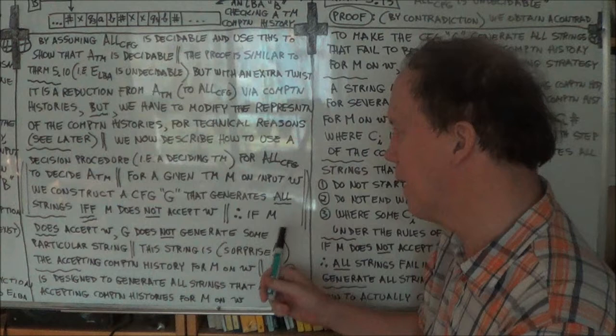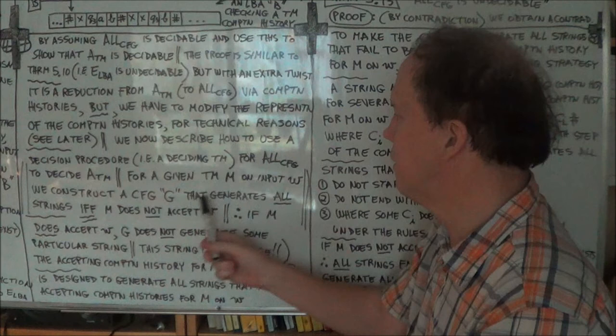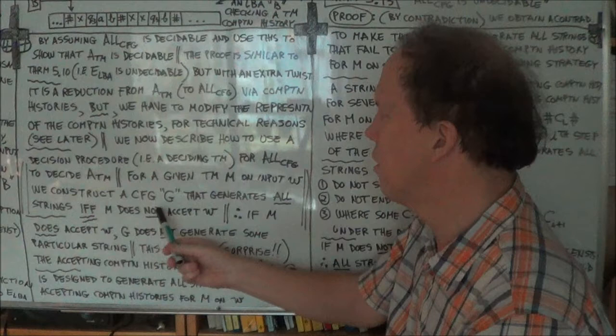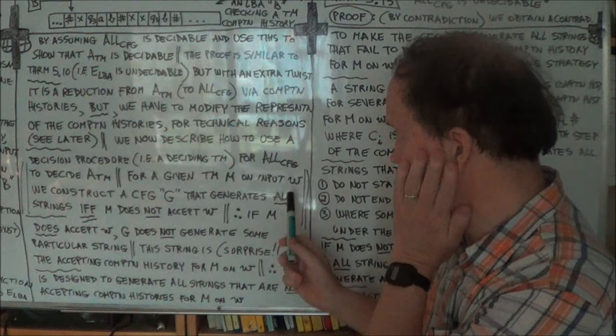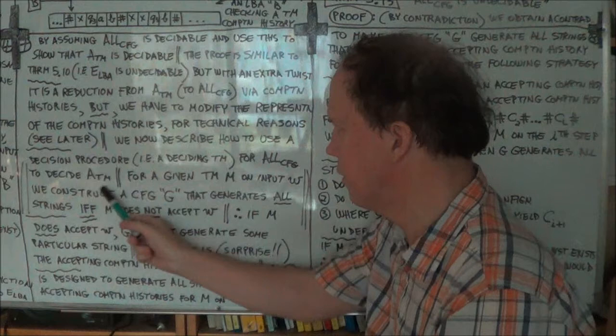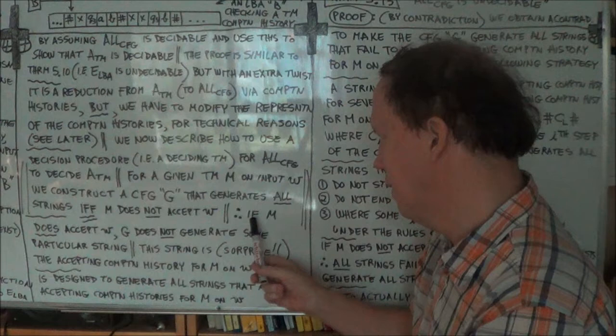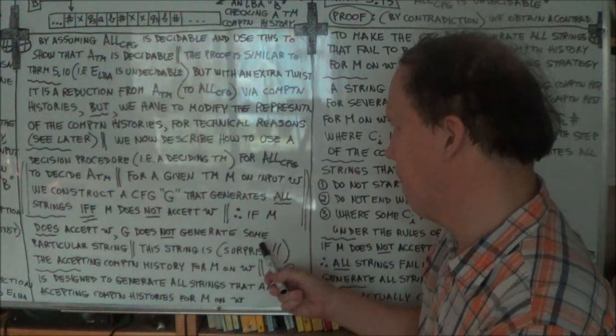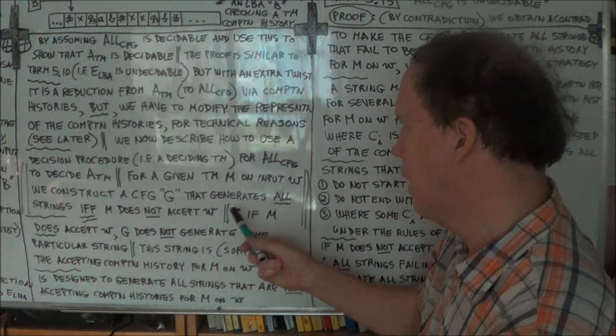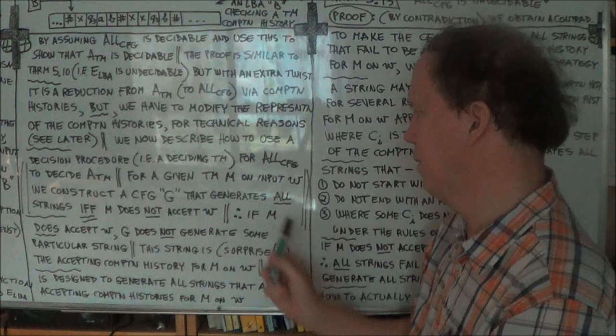So the decider S for A_TM will construct a grammar G, and this G has the property that G will generate all strings if and only if M does not accept W. Now, what happens if M does accept W? It's an if and only if — it goes both ways. G generates all strings if M does not accept W.